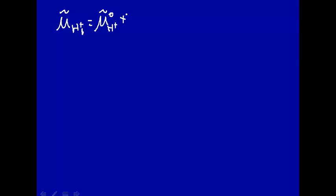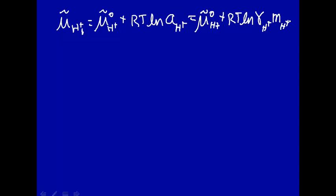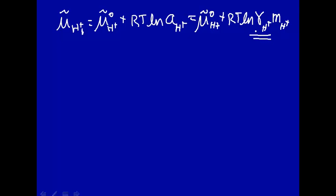That would then be the electrochemical potential of H plus standard state plus RT times the natural log of the activity of the single ion H plus times the concentration of the ion. What standard state? How about molal? Molal concentration of H plus. So there is a definition of the activity coefficient of a single ionic species.